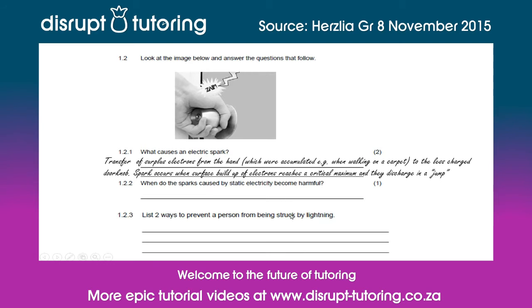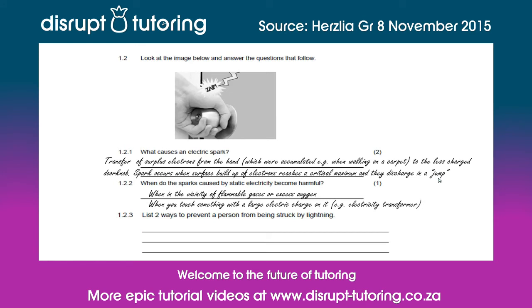Question 1.2.2 asks: when do sparks caused by static electricity become harmful? The first instance is when you're in the vicinity of flammable gases or excess oxygen, because a spark can ignite these gases and cause an explosion. As a bonus answer: when you touch something with a high charge of electricity, for example an electricity transformer, this can cause an electric shock which can stop your heart from beating.